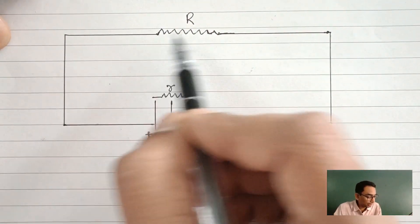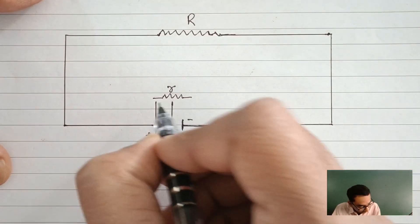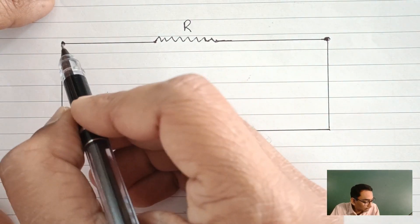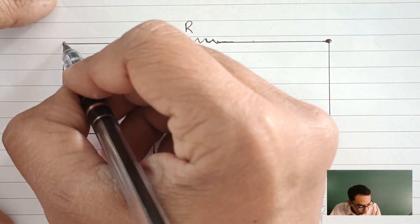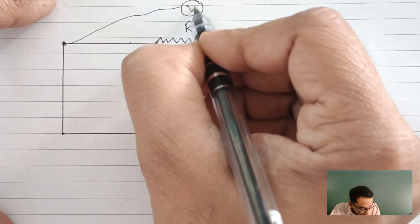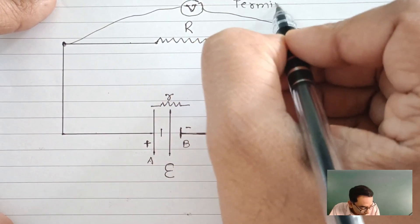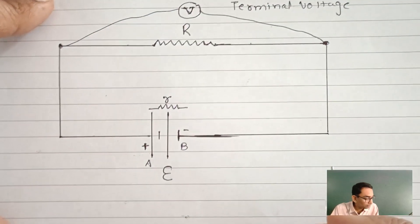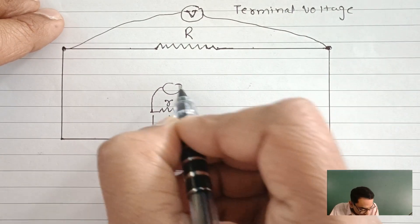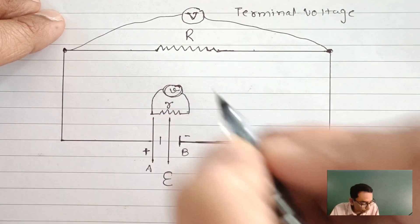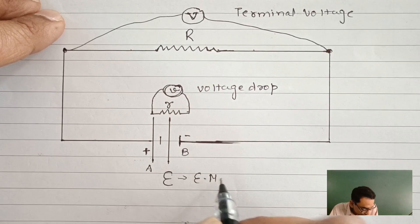Here we are given an external resistance R which is connected with a battery. This battery has an EMF of E and it has an internal resistance of small r. These two are the terminals of the external resistor. I am going to connect a voltmeter across it and it will show some reading V. This V is known as terminal voltage. The drop in potential inside the battery across this tiny internal resistance is known as small v, that is known as voltage drop. And this is the electromotive force, or in short, EMF.